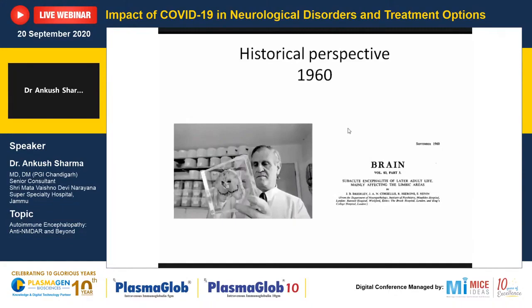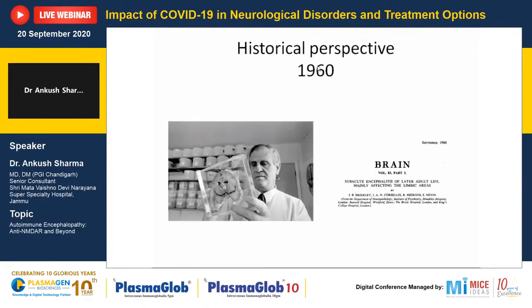This is a relatively new thing which has been widely diagnosed. It has roots going back to 1960. This is the legendary Dr. Porcellis, who is examining coronal sections of the brain of his patients. Subsequently in 1960, he published a paper in Brain describing subacute encephalitis of later adult life, mainly affecting the limbic area.